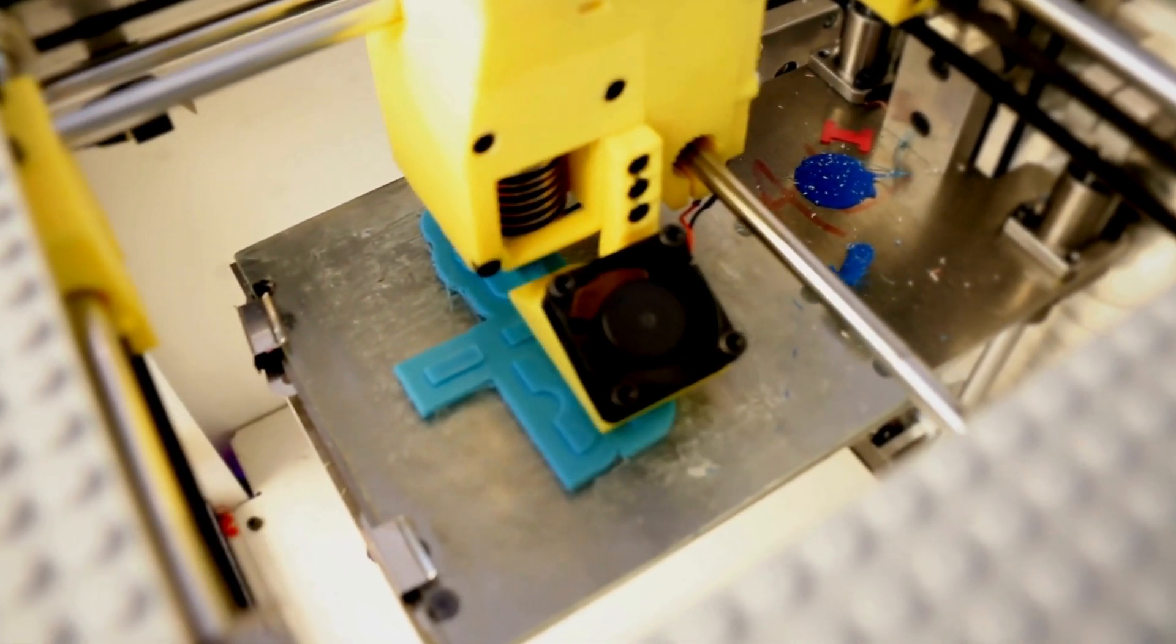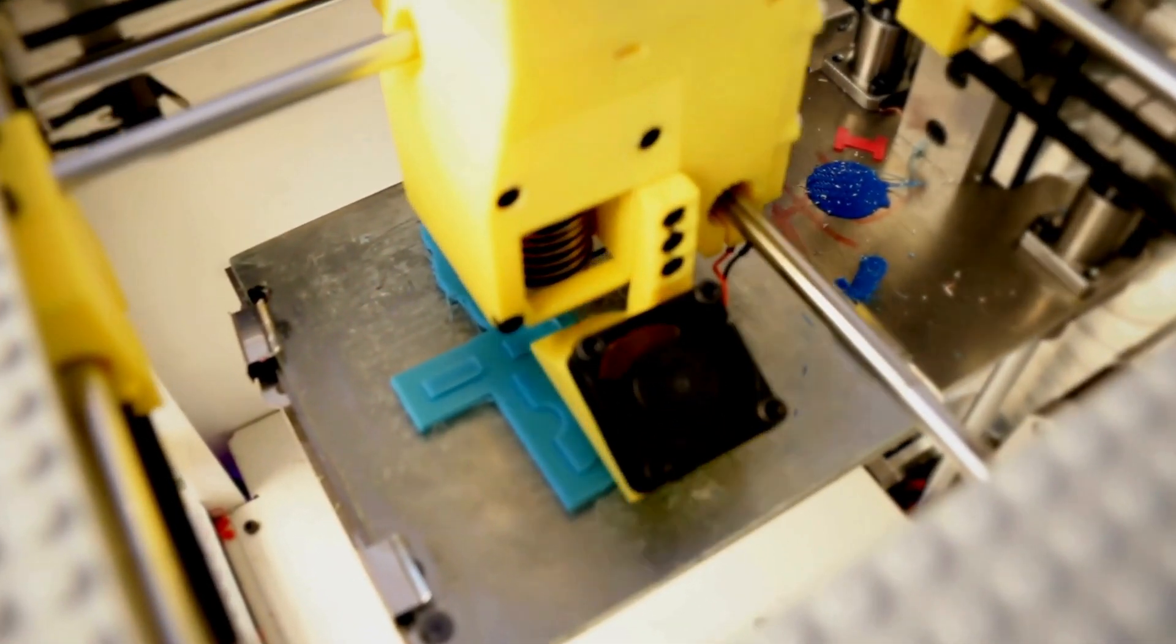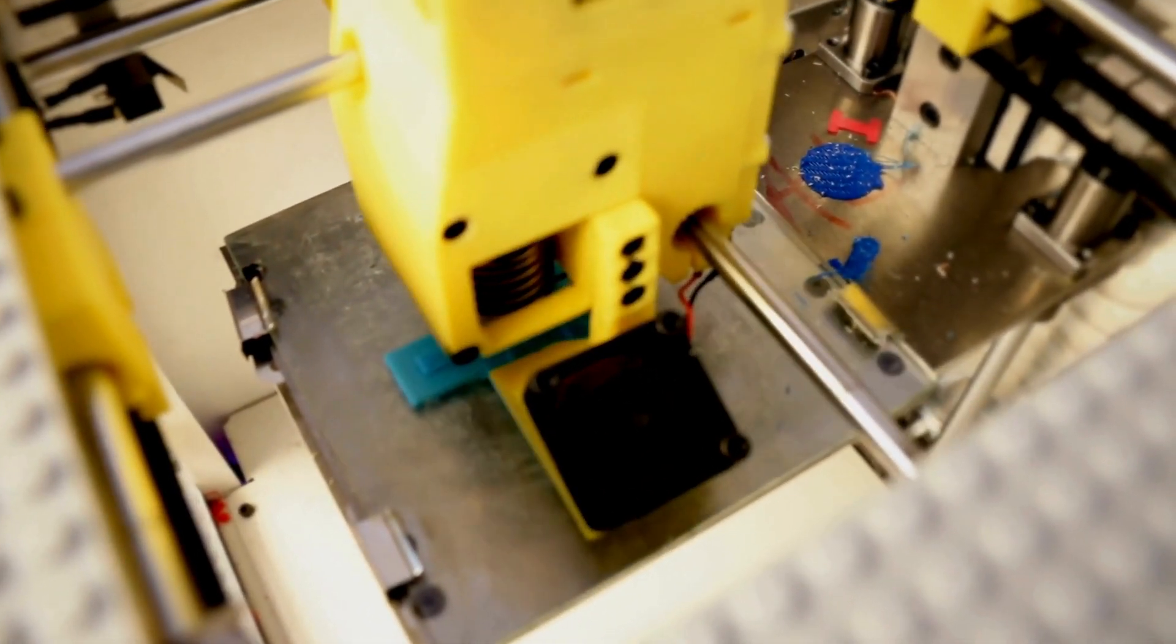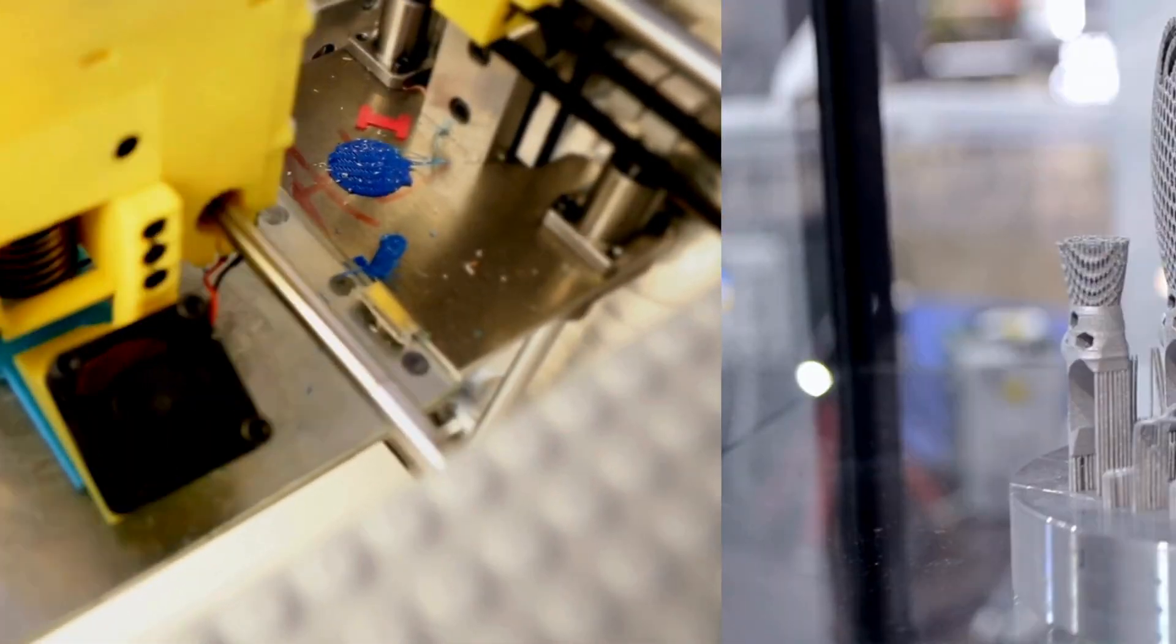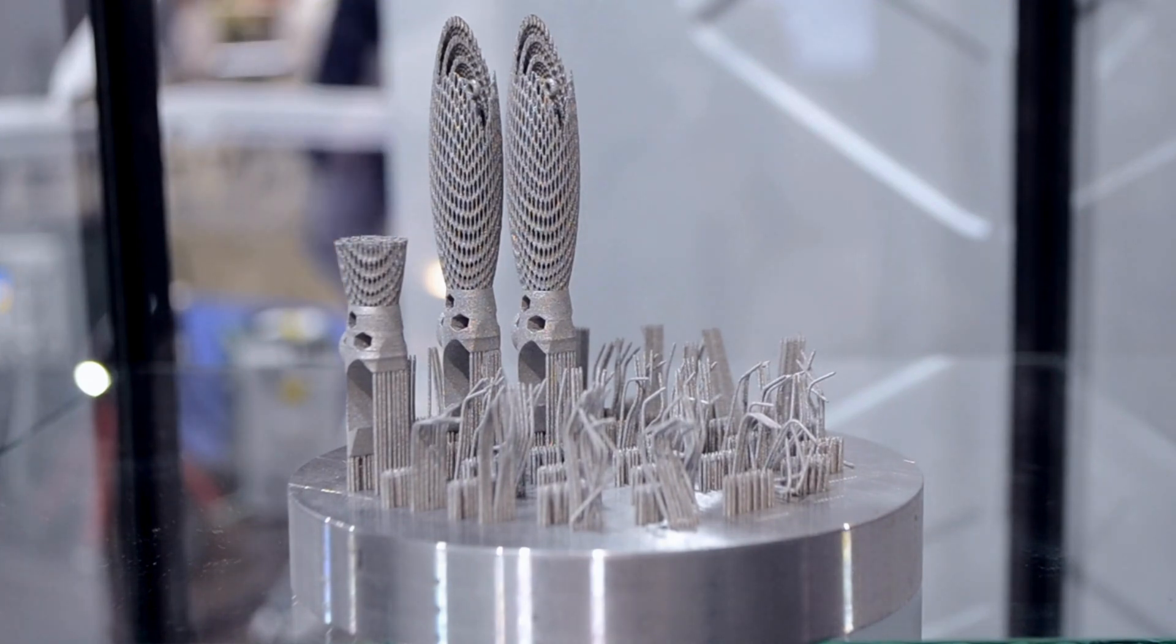However, filament printers also have some drawbacks. They can be noisy, slow, and inaccurate. They can produce visible layer lines, rough surfaces, and stringing. They can also suffer from warping, cracking, and clogging.